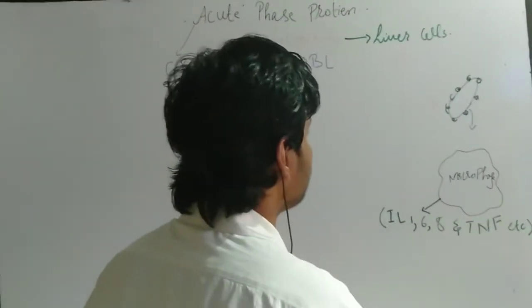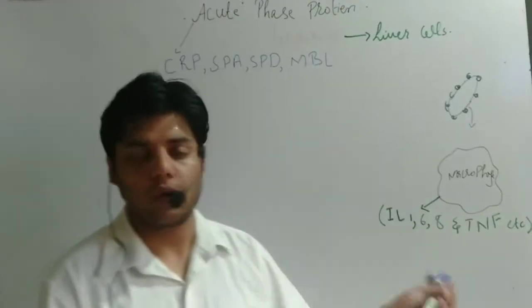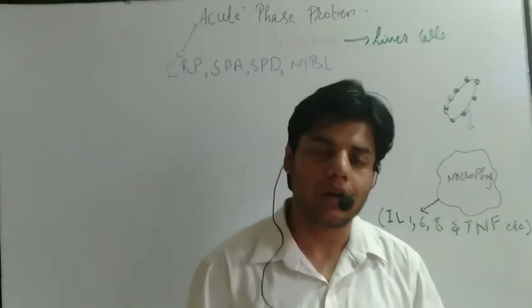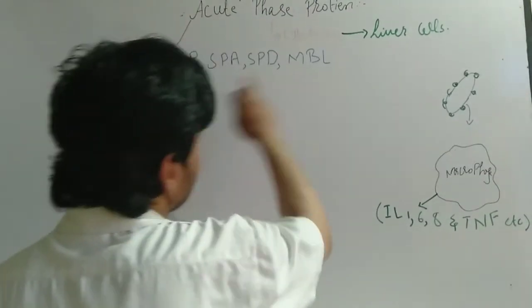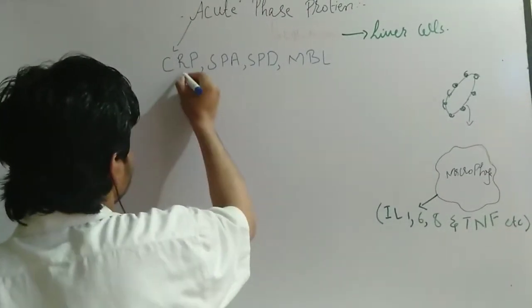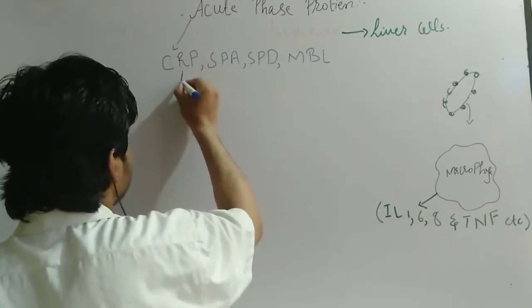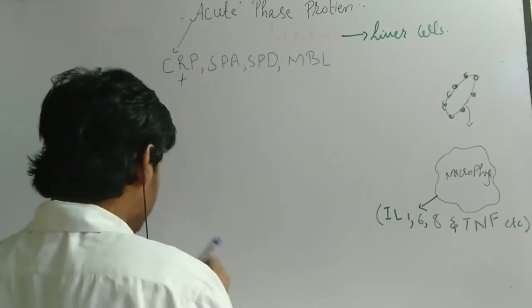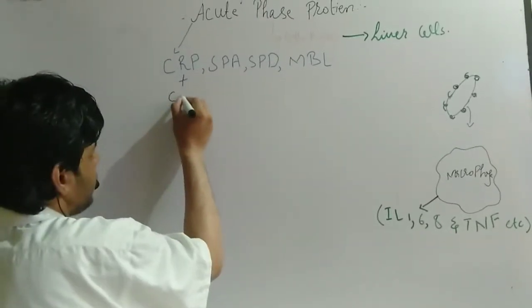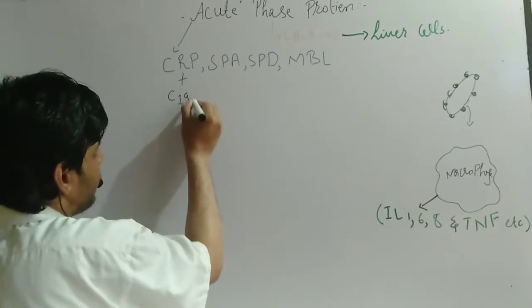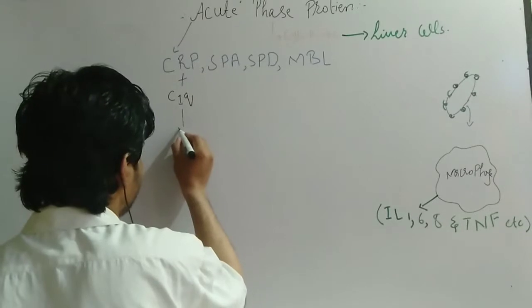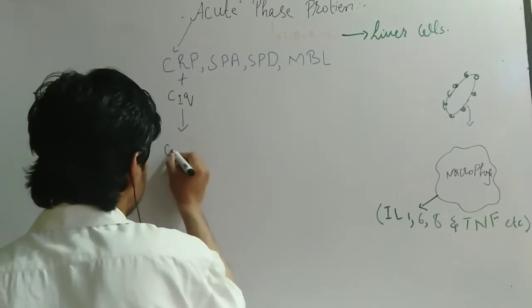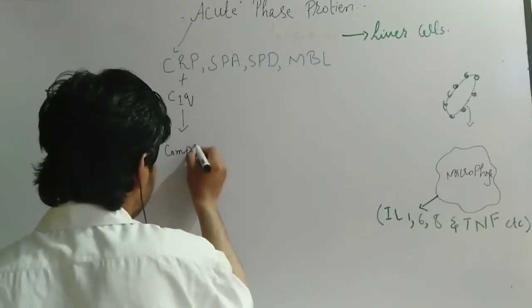Moreover, if the bacteria are killed, the process is under control. Among these proteins, this CRP usually interacts with the C1q protein. Once it reacts with C1q protein, they will activate the complement pathway.